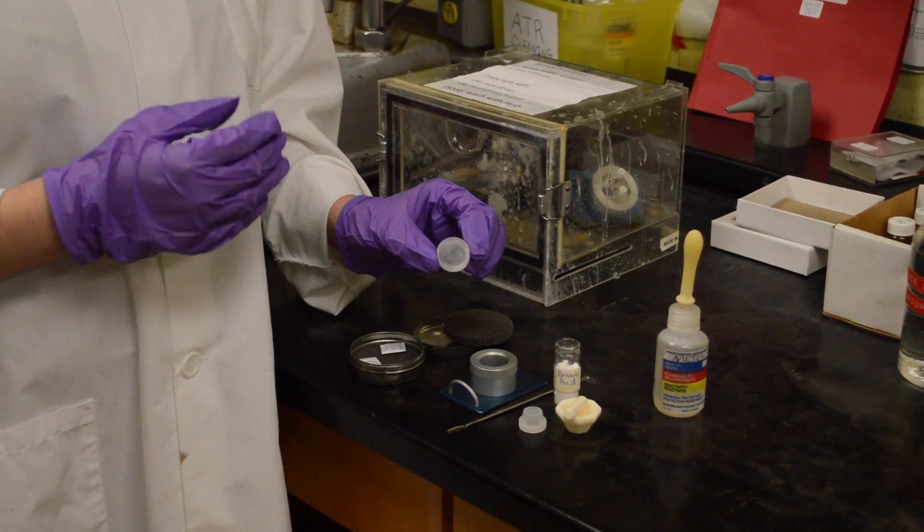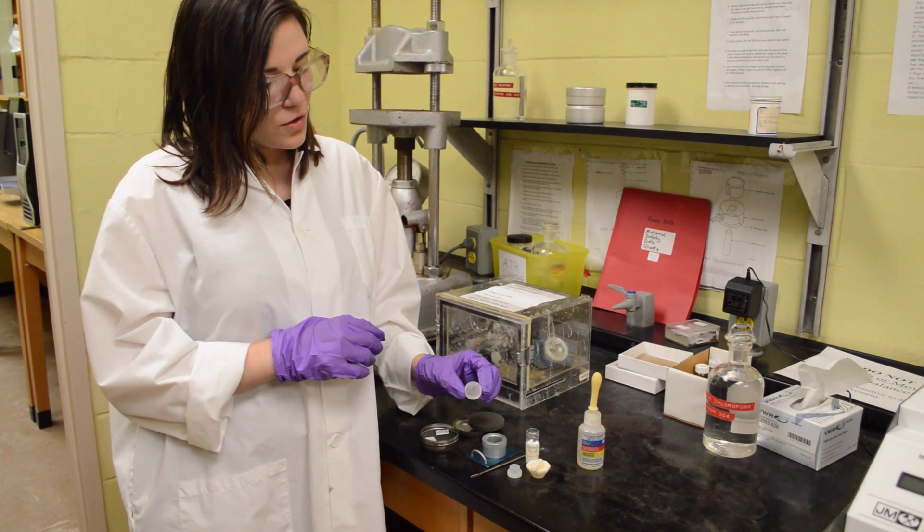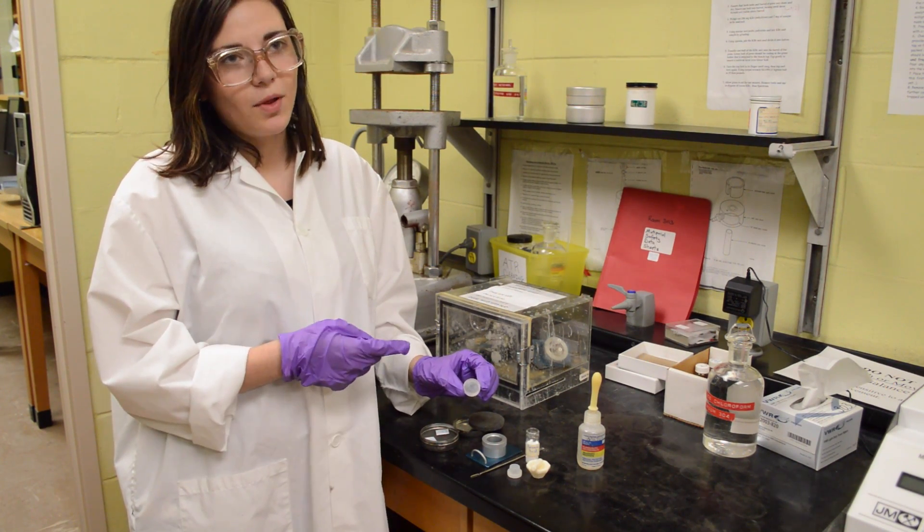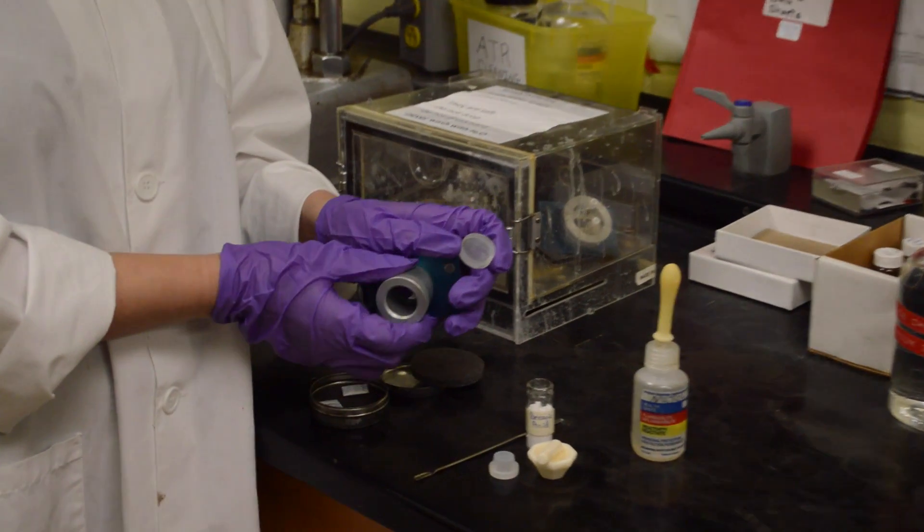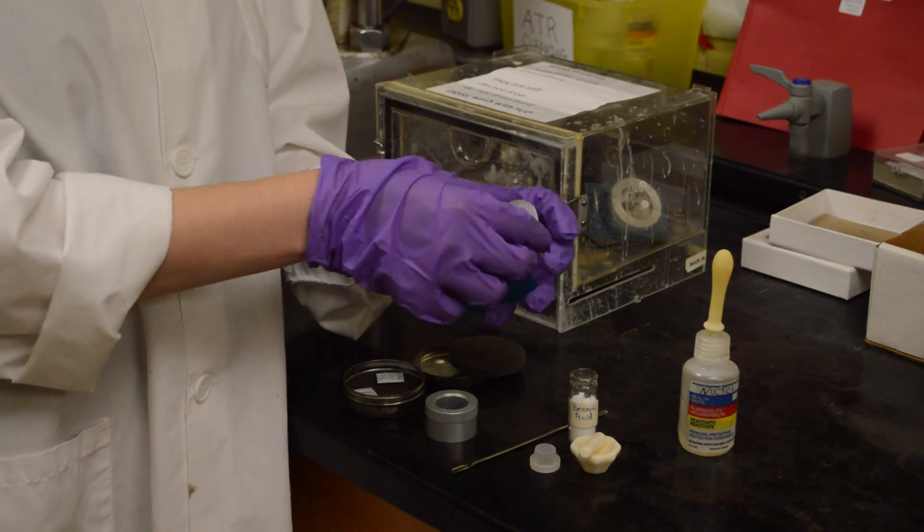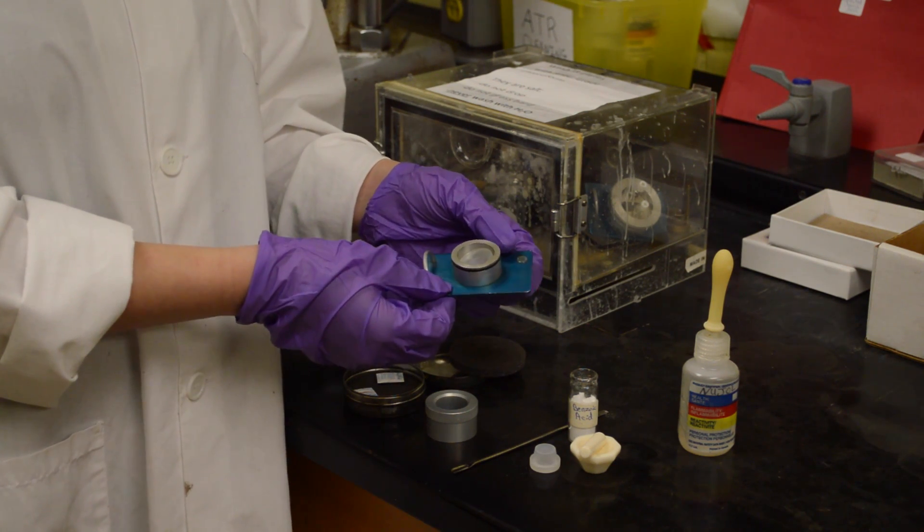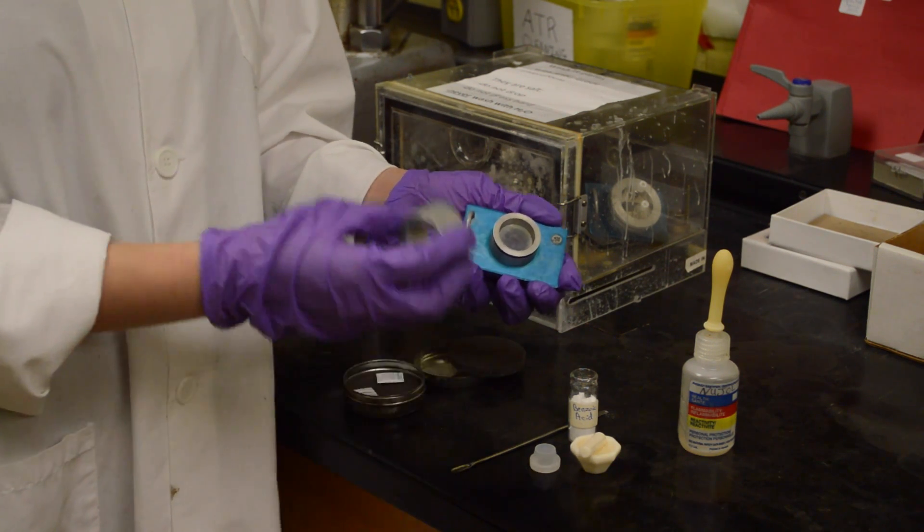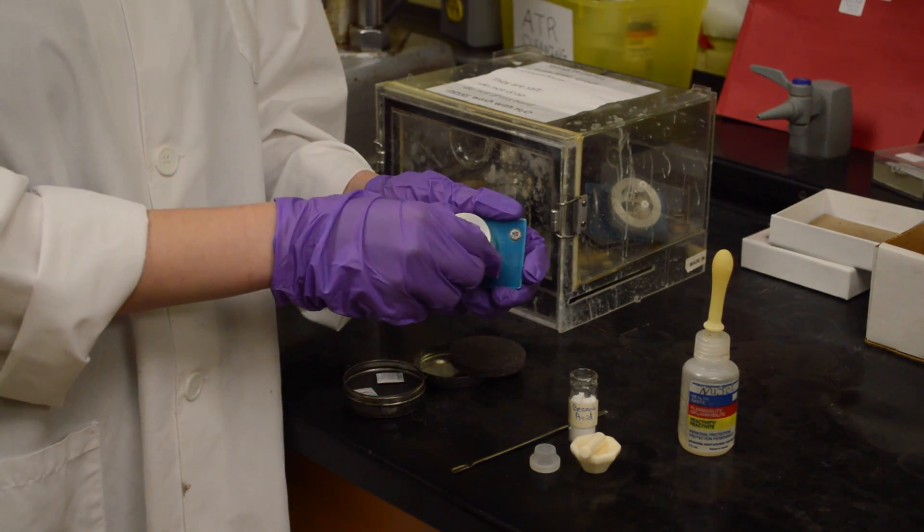Now if you have a pure liquid sample, so not something in solution, a pure liquid sample, you would directly apply that liquid sample onto the plates. The plates then go in the holder like so. The top part comes right off, and then you can just plop the plates in carefully. Flatten them out, and then gently put this back on top. And your sample is ready.